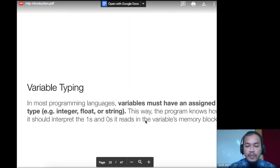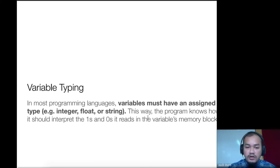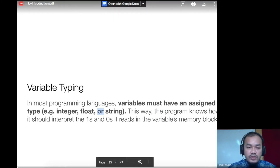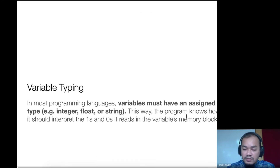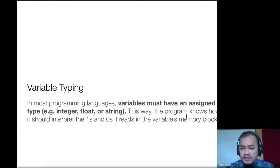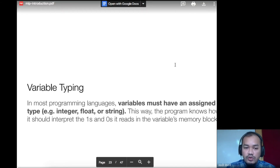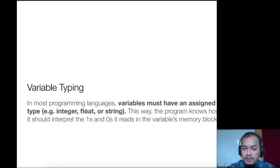Variable typing — there are many types of variables, and each type stores a different kind of value. For example, we have integer. A variable must have an assigned type, even though some programming languages use dynamic typing, like PHP or Python, where you can assign any type — number, string, character. But in strongly-typed languages like Java or C, you must define the variable type. For example, if you define float, you can store numbers with decimal points.